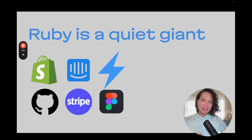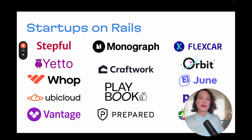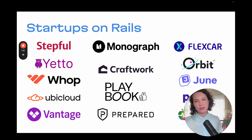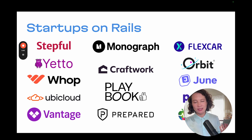Ruby is powering some of the main applications that you're using every single day, including GitHub, Stripe, Figma, Shopify, Intercom, and of course StackBlitz. And it's not just those big existing companies — a bunch of startups are choosing Ruby and Ruby on Rails every year. People choose Ruby and Rails as the language and framework specifically optimized for developer happiness and productivity in building web applications.